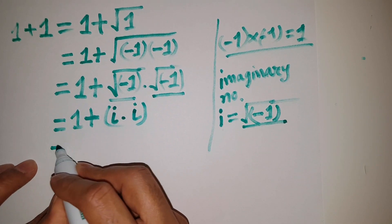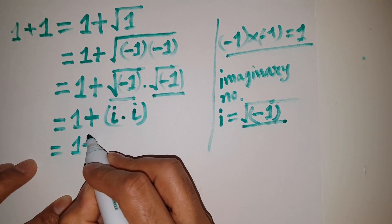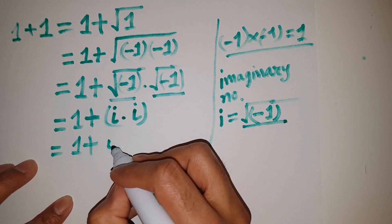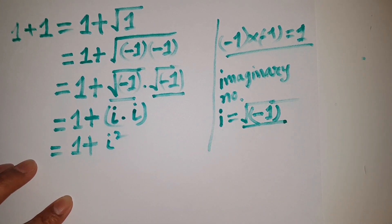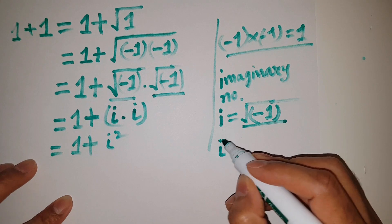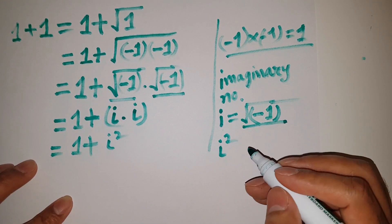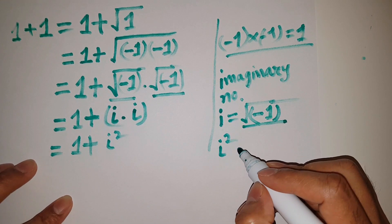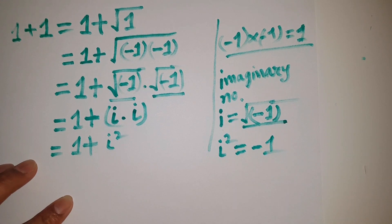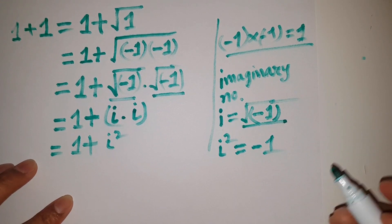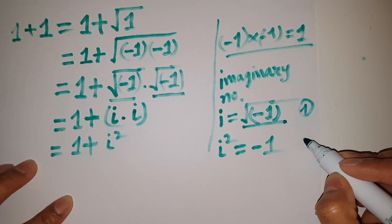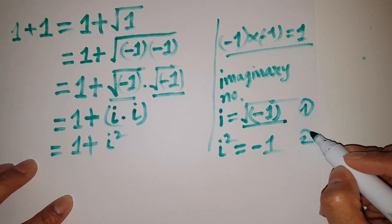So what I'm getting in the next line: 1 plus i times i. And i times i is equal to i squared. We know i squared is equal to minus 1.